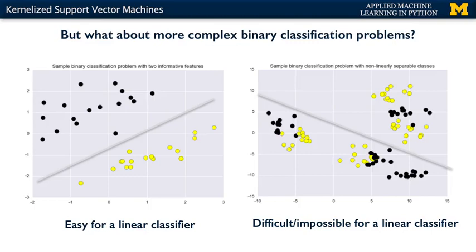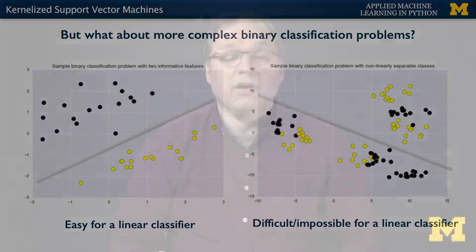Here's an example on the right. This dataset is difficult or impossible for a linear model, a line or a hyperplane, to classify well. So to help address the situation, we're now going to turn to our next type of supervised learning model: a very powerful extension of linear support vector machines called kernelized support vector machines, which I'll just call SVMs, that can provide more complex models that go beyond linear decision boundaries.